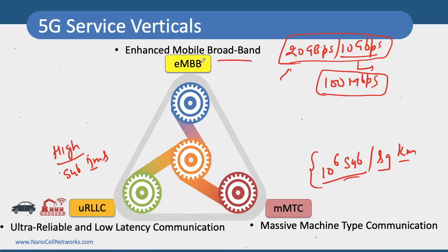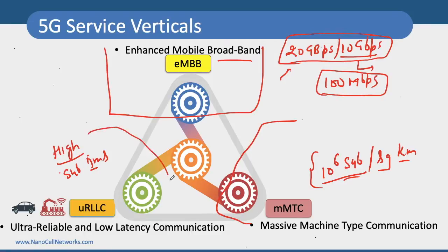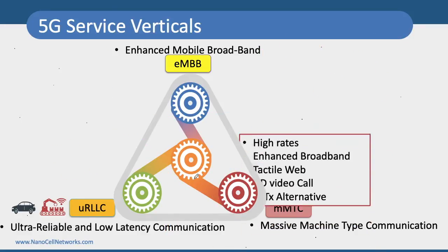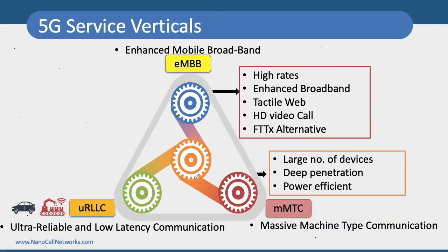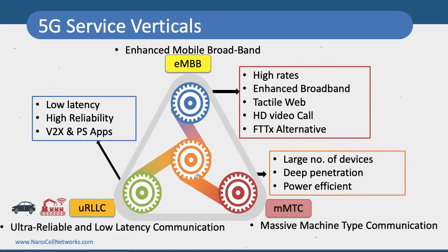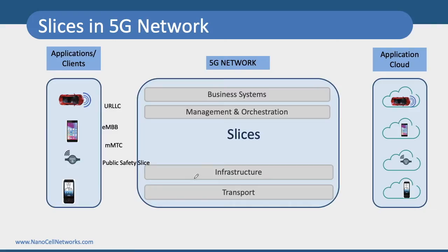To achieve all these things, these are completely different network requirements: the network requirement for eMBB, for URLLC, and for mMTC are entirely different. But the challenge is that we have to run all these different service verticals on a single network infrastructure. To achieve this — supporting high data rate, more number of devices, low latency and high reliability — we have to divide our network logically but based on a single physical infrastructure. The answer for this is slicing.